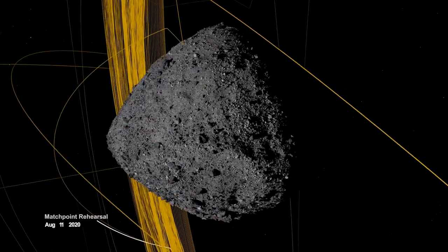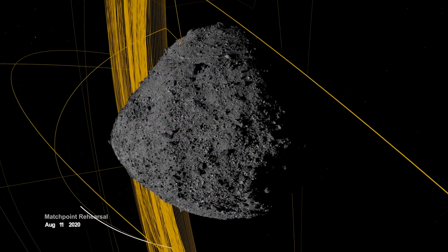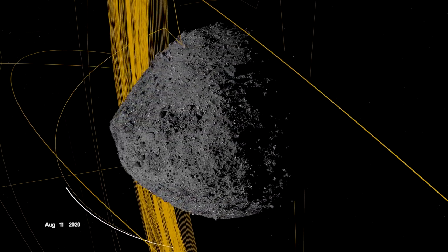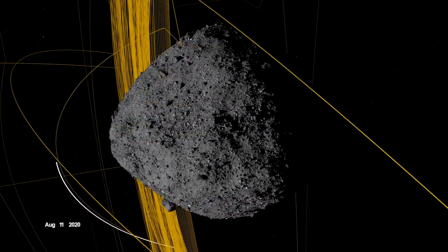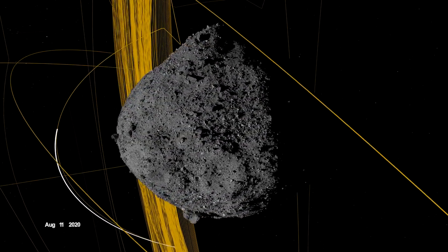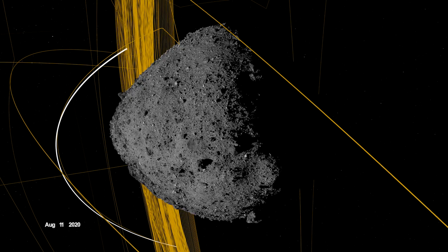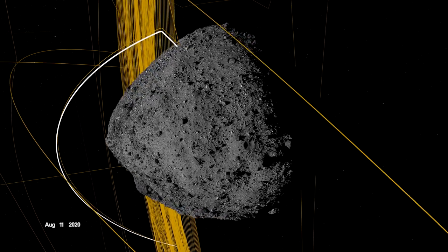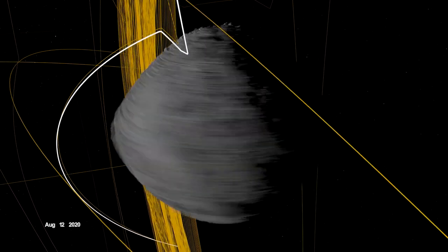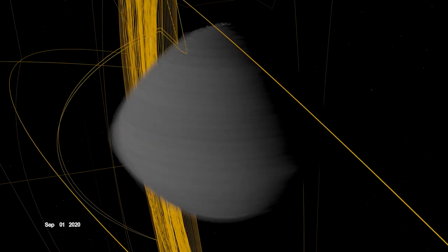On August 11th, OSIRIS-REx departed its home orbit and made a four-hour traverse to Bennu's northern hemisphere, retracing its earlier path. After performing the checkpoint engine burn to begin its descent, it made a second engine burn called Match Point to match Bennu's rotation before backing away at an altitude of approximately 40 meters.